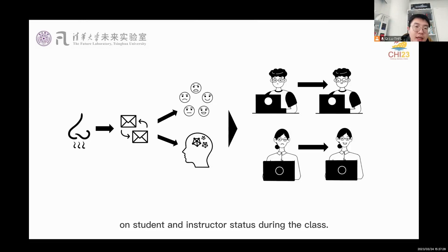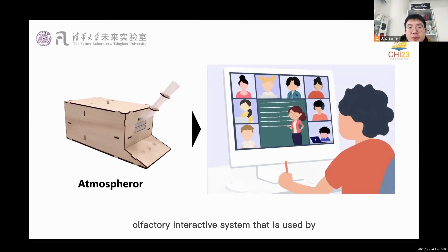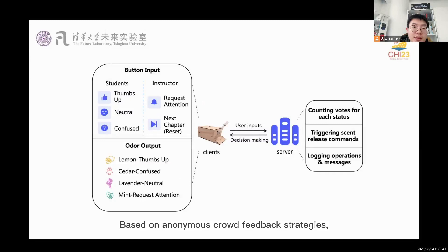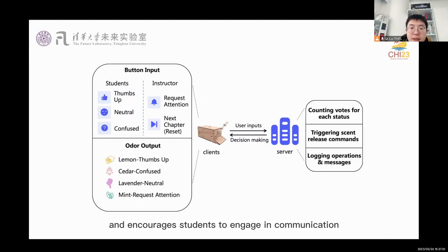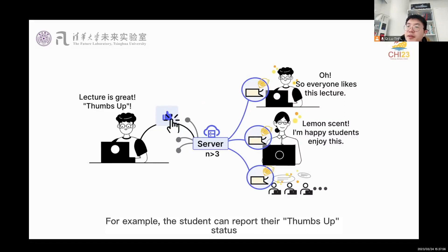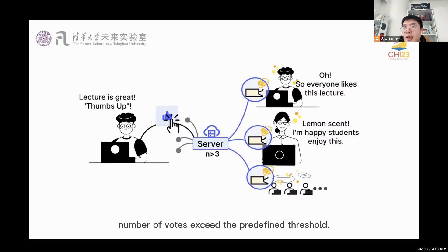Atmosphere is an olfactory interactive system that is used by all students and instructors. Based on anonymous crowd feedback strategies, the system creates a shared scent atmosphere in the virtual classroom and encourages students to engage in communication. For example, the student can report their thumbs-up status, and when the number of votes exceeds the predefined threshold, a lemon scent atmosphere will be created and smelled by everyone in the class.